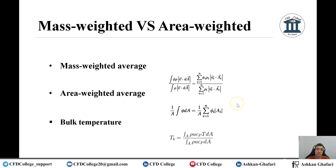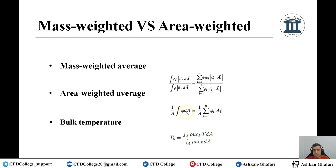On this slide you can see the formulas behind these types of average report definitions. Area weighted average has a very simple formula: one over A — where A is the area — times the integral of phi (the variable, for example pressure, velocity, or temperature) times dA, the differential area of each face element. For example, if you want to calculate the velocity at the outlet in ANSYS Fluent, you define a report with area weighted average of velocity at the outlet.